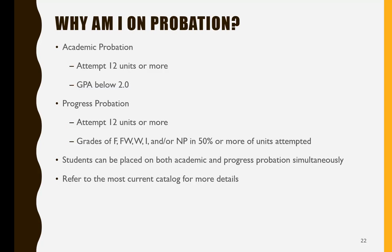There are two different types of probation: academic and progress probation. Academic probation is when a student attempts 12 or more units and their GPA falls below a 2.0. Progress probation is when a student attempts 12 or more units and has earned a grade of F, FW, W, I, and/or NP in 50% or more of all units completed. You can be placed on both academic and progress probation simultaneously. Refer to the most current catalog for more details.